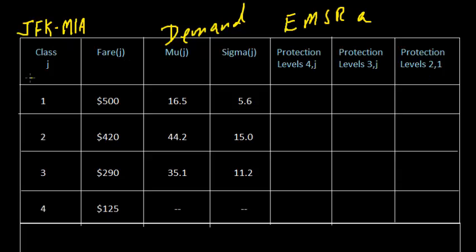We're going to calculate protection levels for each of these fare classes. The role of the revenue management system is to ensure that enough seats are set aside or protected for high fare customers when they arrive. We assume that low fare customers arrive first. The first customers who request seats are those willing to pay only $125. We want to make sure that enough seats are protected for the higher class customers, so those seats don't get sold at $125. Then as the $290 customers arrive, we want to make sure that we've protected enough seats for classes one and two. Finally, when there's only two classes left, we need to protect seats for fare class one from being sold to fare class two.